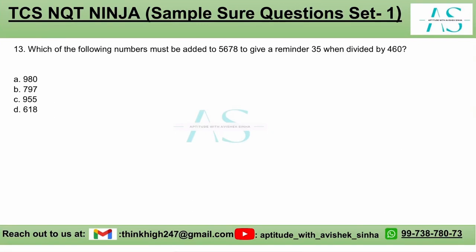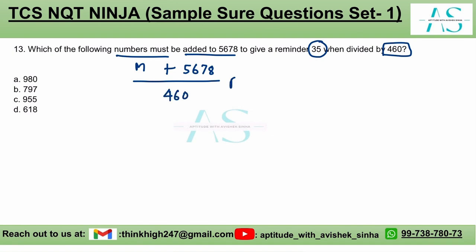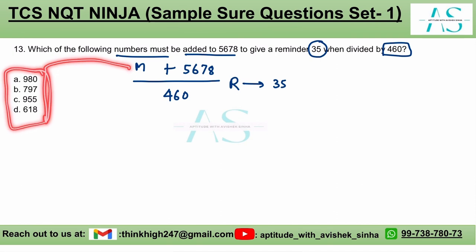Which of the following numbers, let's say m, must be added to 5678 to give a remainder of 35 when divided by 460? So suppose I divide this whole set of numbers by 460, the remainder in this case must be equal to 35. That is what the question is all about. And what is m? m could be any of the four values.